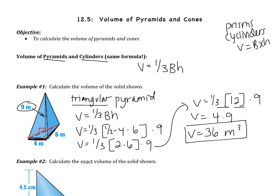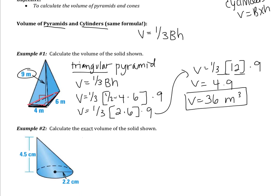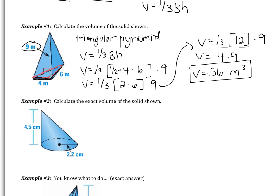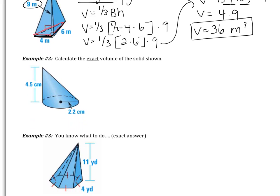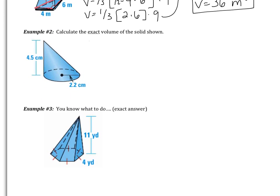That's not too bad, but obviously not all problems are going to be this simple — they're going to get more complicated. Example number two says calculate the exact volume of the solid shown. This one is a cone, so my volume is going to be one-third the area of the base multiplied by the height. This time our base is a circle, so it's going to be pi r squared. So the volume is really one-third pi r squared times height.